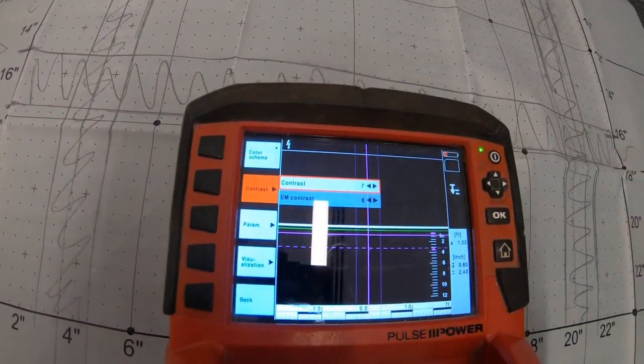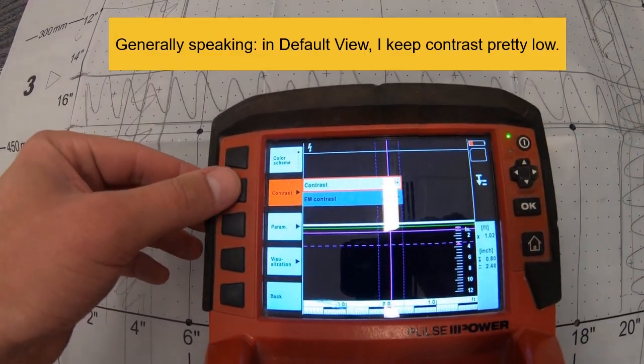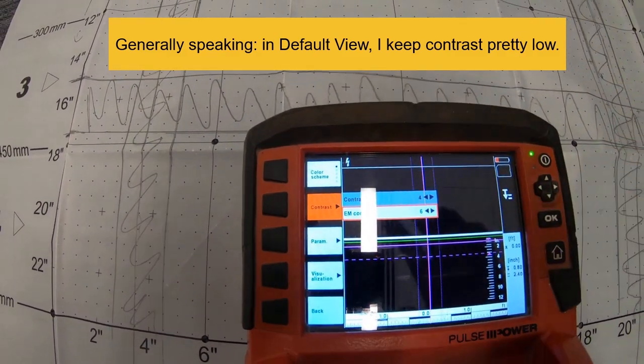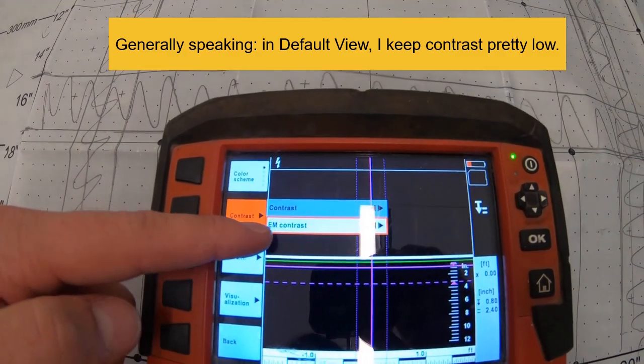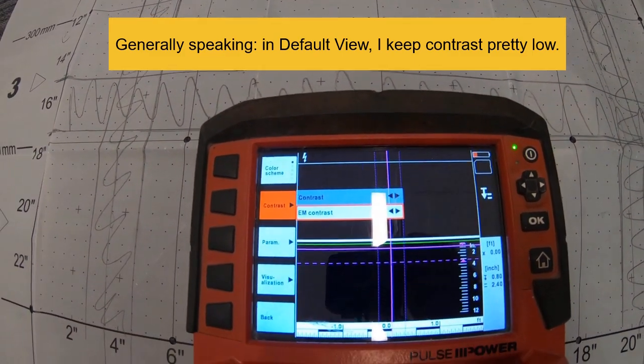But contrast, when I'm scanning, I actually like to have a little bit lower of a contrast, like maybe closer to 4. And my EM contrast, I don't really use my EM sensor too much. But if you use your electromagnetic activity and you have the PS1000 scan, just play with that. See what you like.